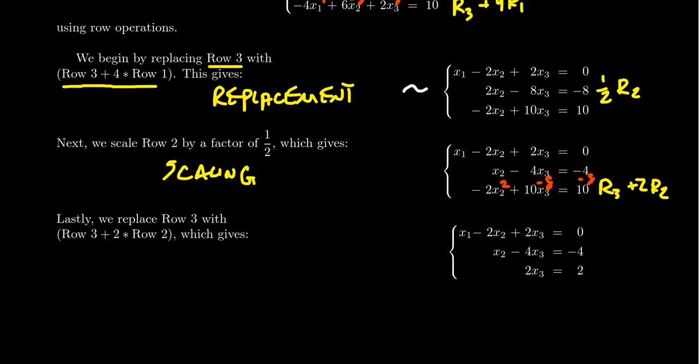So, when you add these together, the 2s will cancel. So, there is no x2 in now. You're going to get 10x3 take away 8x3. That's going to be a 2x3. And then you're going to get 10 minus 8, which is a 2. And so, with these three operations we did, we did replacement, scaling, then replacement again. We now have a system equation that looks like the following.